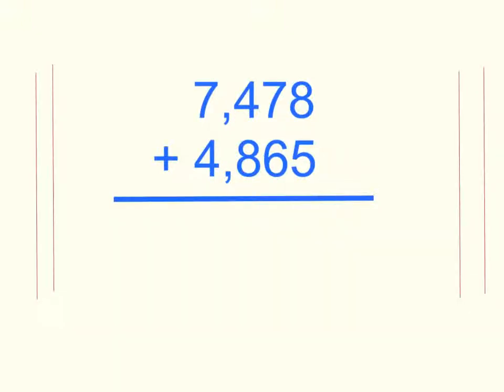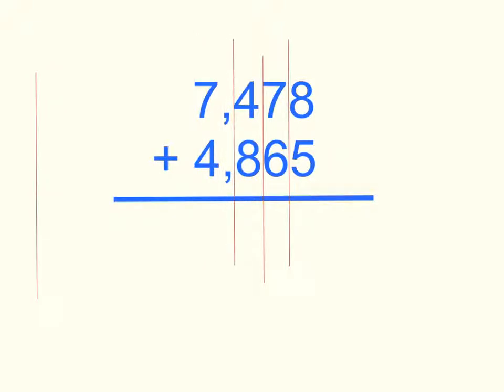To add numbers using the standard algorithm, you have to write them in a column vertically lined up. The ones under the ones, the tens under the tens, hundreds under the hundreds, and thousands under the thousands. Drawing these lines between each place value column can help you keep them straight.